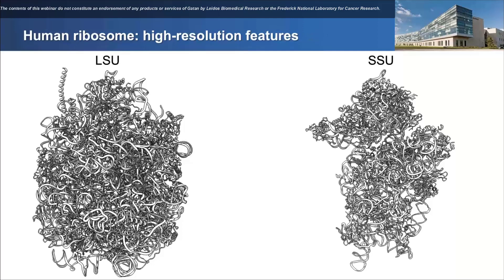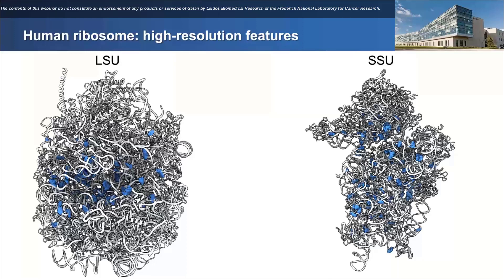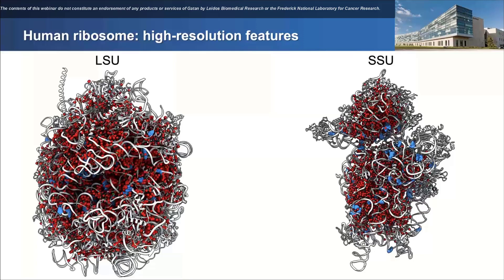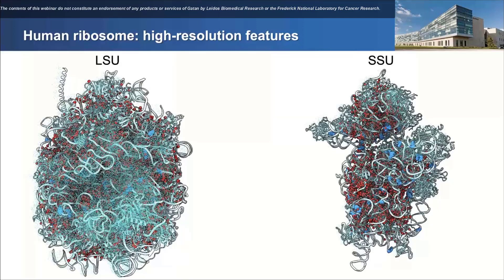Just to give a wider view of the accumulation of new features at high resolution: shown are ribbon representations of the large and small subunits of the ribosome. At around 3 angstroms you start to see some post-transcriptional modifications in blue and metals in green. At about 2.5 angstrom resolution you can reliably model in many water molecules shown in red. Once you get to 2 angstroms, especially with difference maps, you can start to see the locations of hydrogen atoms. It shows how these two subunits are really decorated with all this extra information that at first glance you may not think would be important, but for the ribosome it probably is.